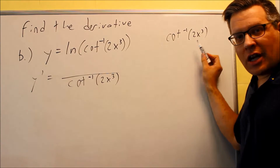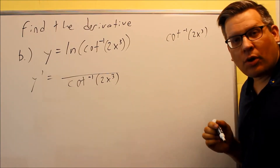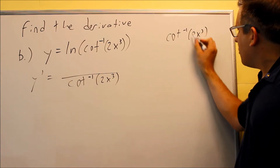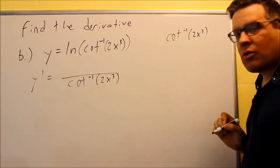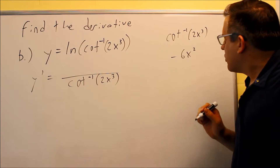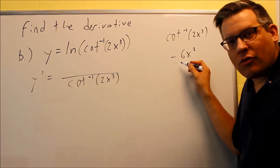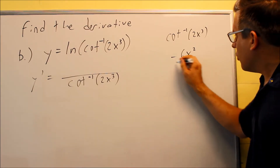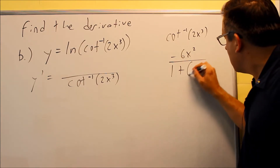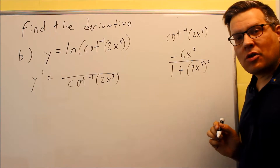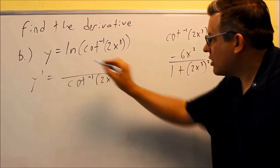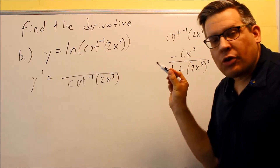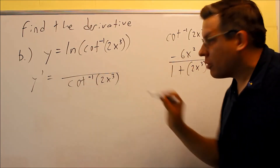When finding the derivative of the inverse cotangent, we use the formula: negative u prime over 1 plus u squared. The u prime is the derivative of the inside part. The 3 comes down and multiplies by 2, giving us negative 6x squared. The negative comes from the formula itself. On the bottom, we have 1 plus u squared, where u is 2x cubed, so that gets squared. This whole result is our u prime, which goes on top in the ln formula.